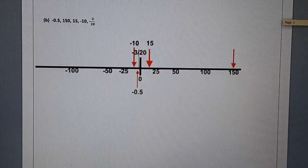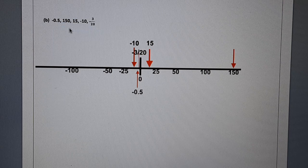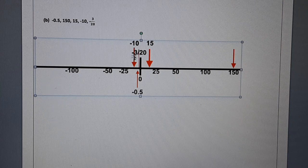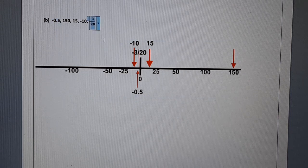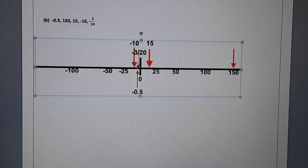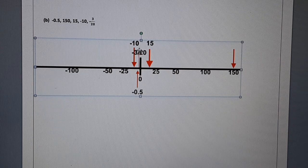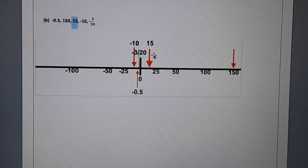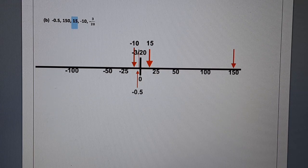Next part B is to arrange the numbers on a number line in ascending order. These are the given numbers. Minus 10 is the smallest one, located over here. Then we have got minus 0.5 and minus 3 over 20. So here we have got minus 0.5 just before 0. And this thin line is minus 3 over 20. Then we have got 15 over here, and then we have got 150 over here. So this is the solution for part B.